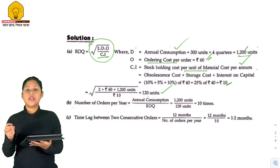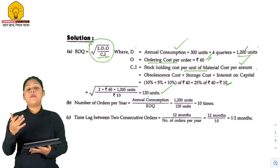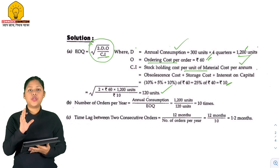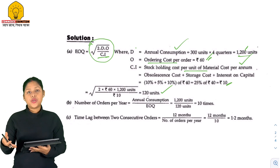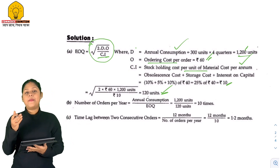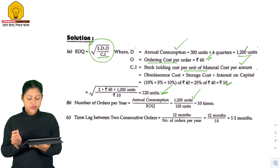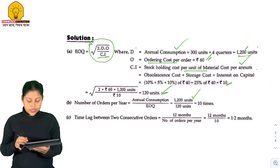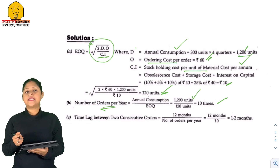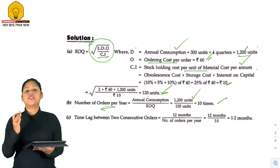Next, what do we know about the number of orders per year? EOQ means Economic Order Quantity — the quantity we order at one time. The number of orders is annual consumption divided by Q. Annual consumption is 1,200 units divided by Q of 120 units, giving 10 times per year as the number of orders. This means the order will be placed 10 times so that we have a total of 1,200 units.